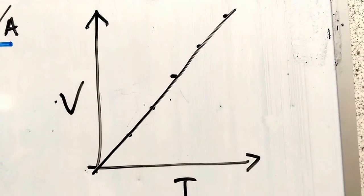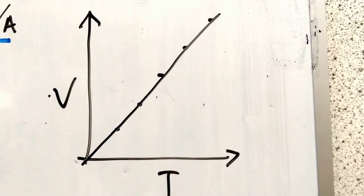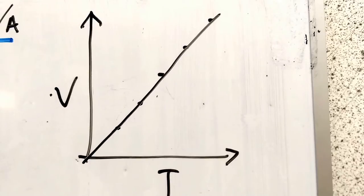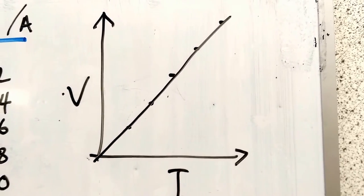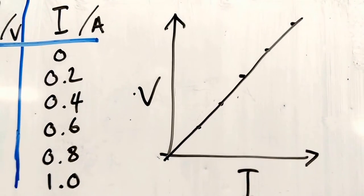You're going to plot a graph, V on the y-axis, I on the x, and hopefully you should see it's a straight line. That proves that V is proportional to I. If V increases, I increases. And in fact, if V doubles, then I doubles as well.